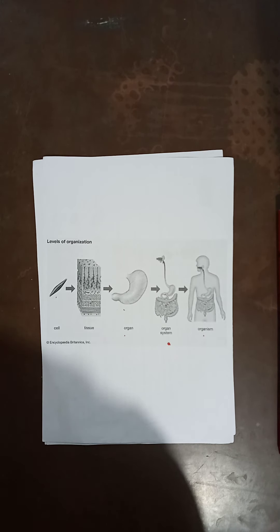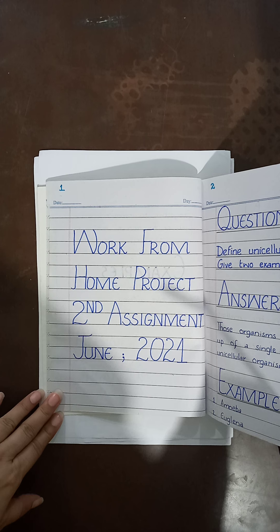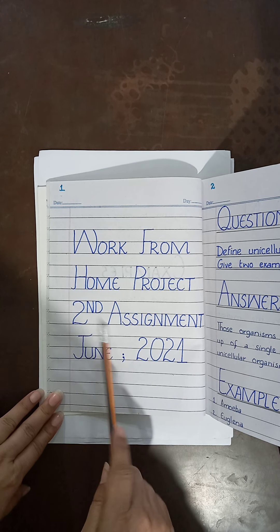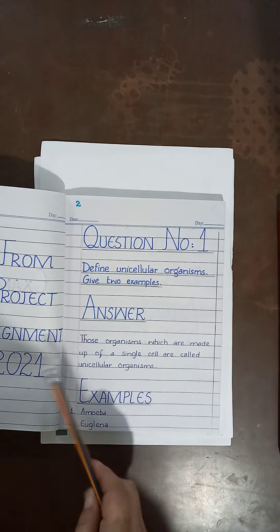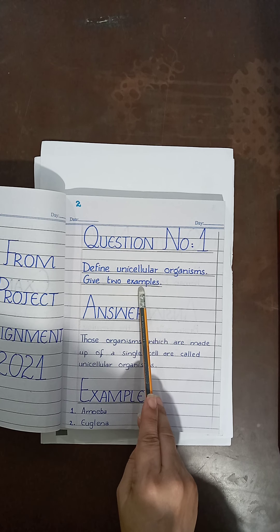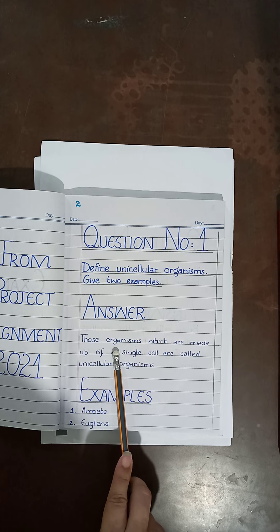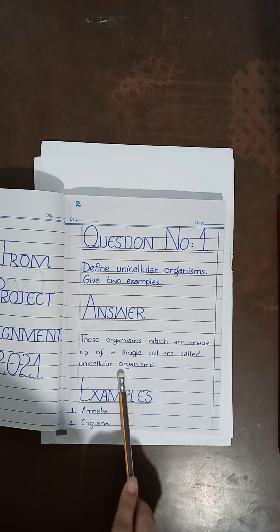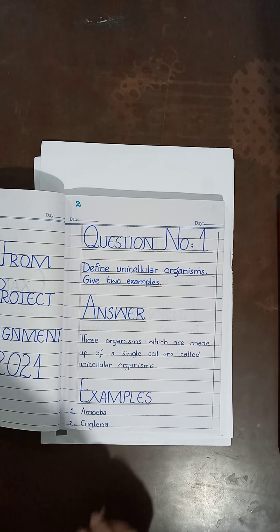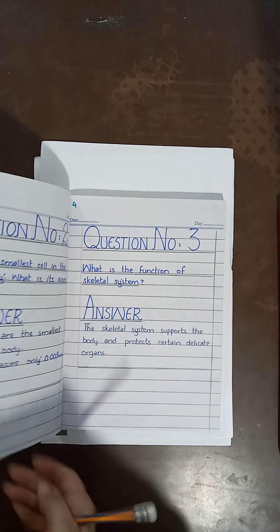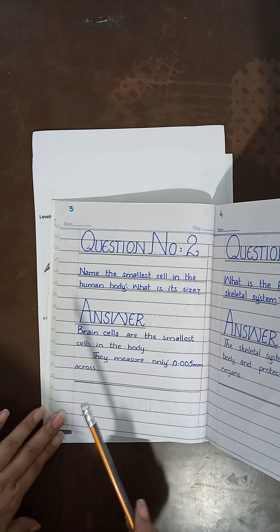Now let us start our work from home project — the second assignment, June 2021. We have five questions. Question number one: define unicellular organisms and give two examples. The answer: unicellular organisms are those which are made up of a single cell. Examples are amoeba and euglena. Question number two: name the smallest cells in the human body and what is its size?